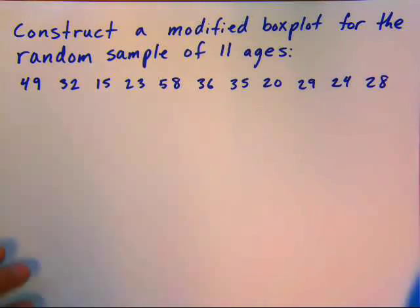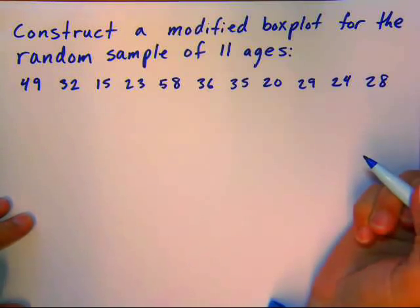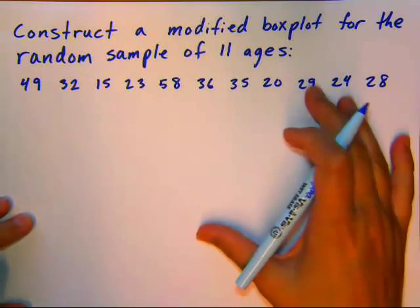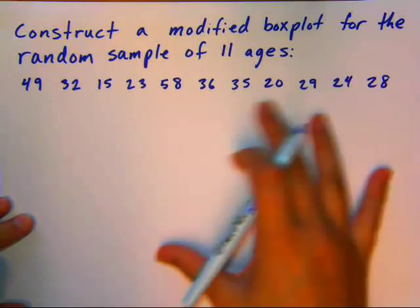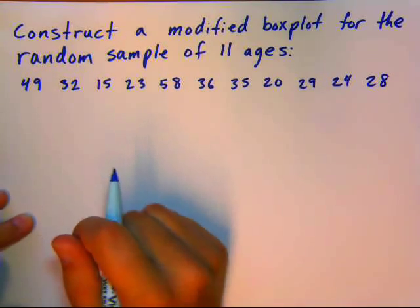This example is to construct a modified box plot for the random sample of 11 ages. When we're doing any type of percentile, we'll need quartiles for our box plot, and you want to order your data from smallest to largest.